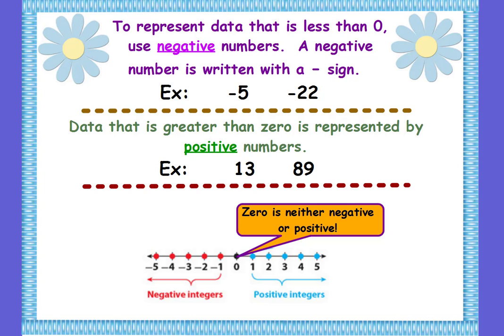To represent data that is less than zero, we use negative numbers, and a negative number is written with a minus sign. An example: negative 5 and negative 22. Note that even though this looks like a minus sign, we call it a negative symbol, and when we read the number, it's read negative 5, negative 22. Please don't say minus 5 or minus 22. We want to talk like a mathematician, so negative 5, negative 22.